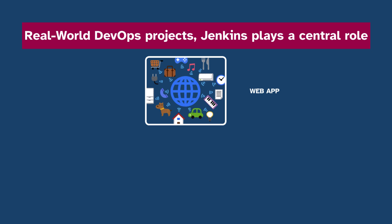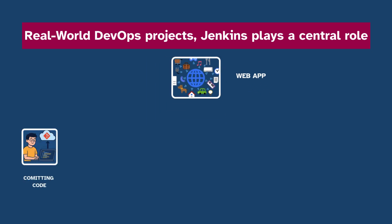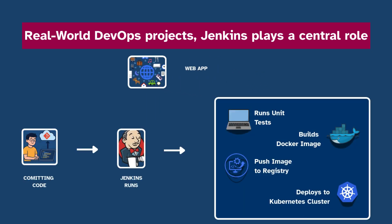In real-world DevOps projects Jenkins plays a central role. Say you are building a web application — every time you commit code, Jenkins runs your unit tests. If everything passes, it builds a Docker image, pushes that image to a container registry, then deploys it to a Kubernetes cluster. All of this can happen automatically with Jenkins.